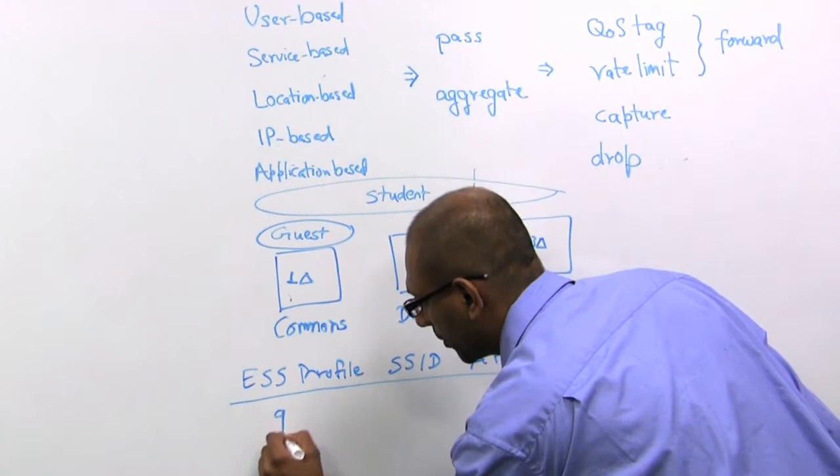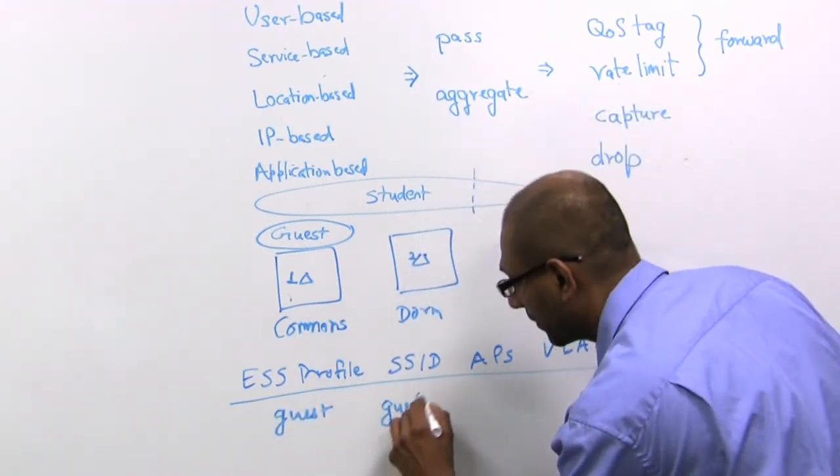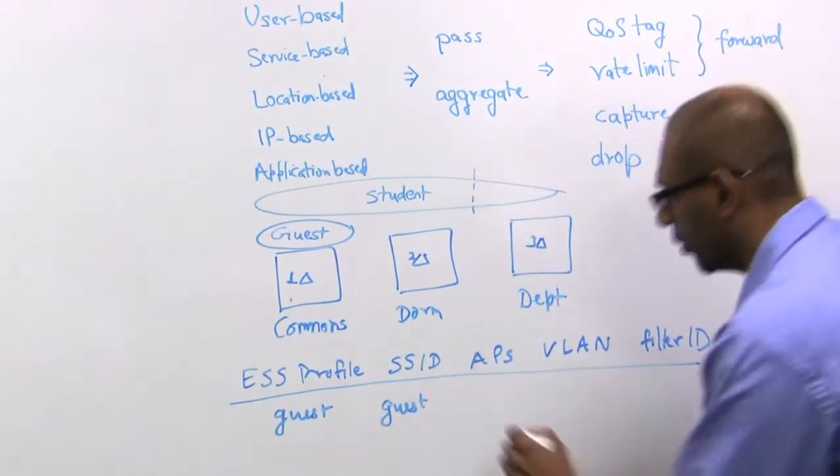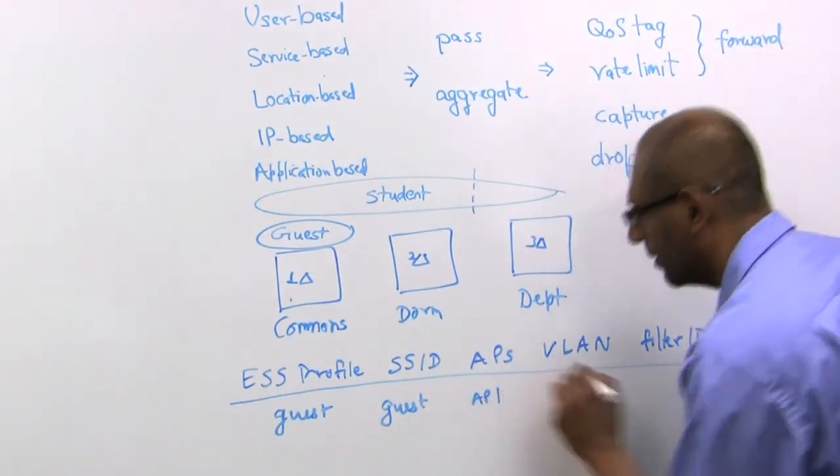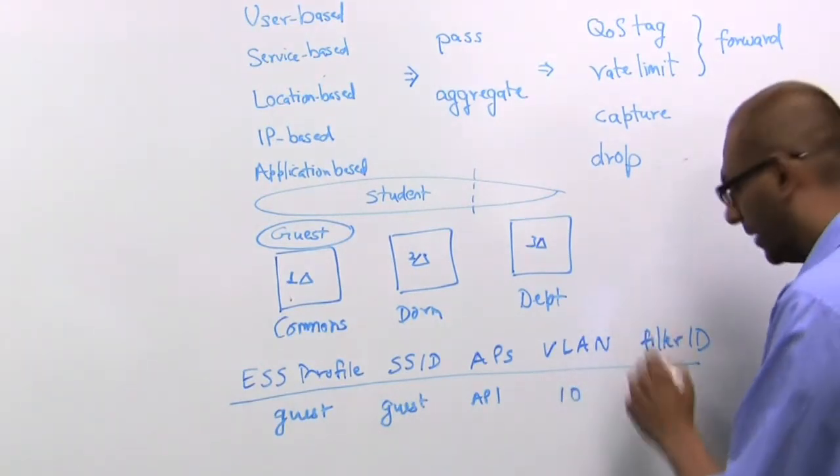So we'll call ESS profile guest with an advertised SSID also of guest. And this applies only in AP 1. Let's say it got tagged to VLAN 10 and it got a filter ID of 4.